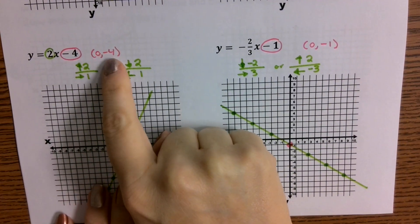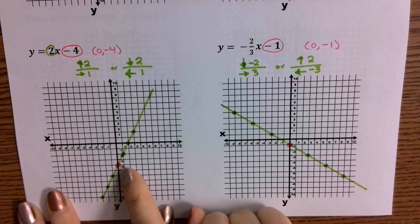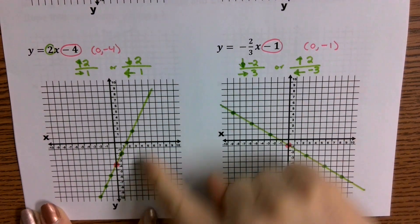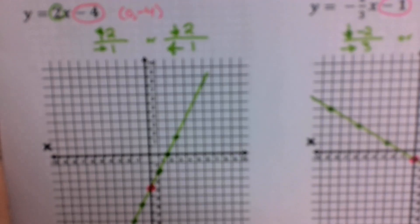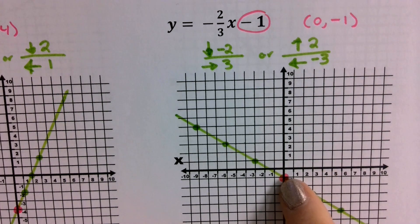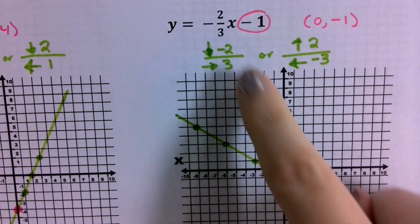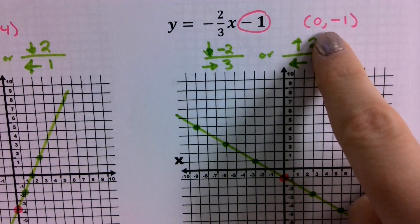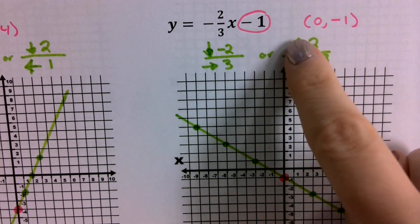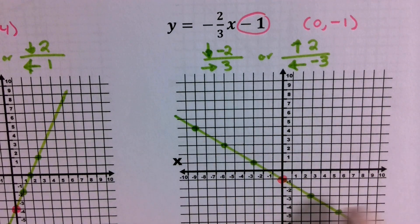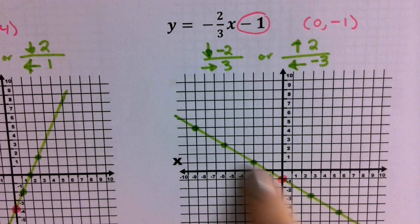Let's take a look. For the first one, your y-intercept was at negative 4, so you should have graphed it down below. Then you should have gone up 2 to the right 1, or down 2 to the left 1 — and it should have looked like this. For the next one, your y-intercept was at (0, -1), and you have a slope of negative two-thirds. That means you either go down 2 to the right 3, or up 2 to the left 3, making one of those the negative value. So you should have had a graph that looks like this.